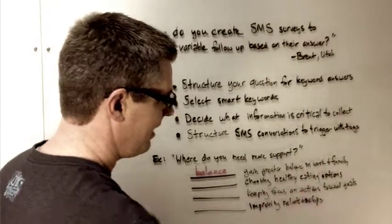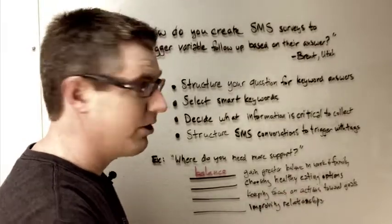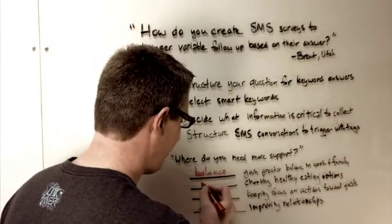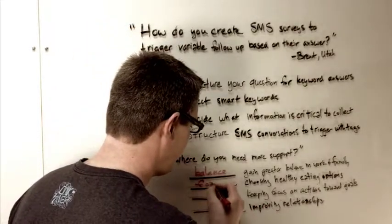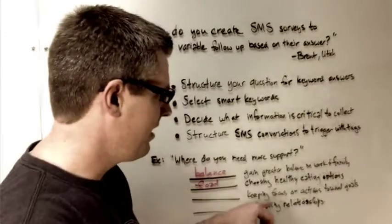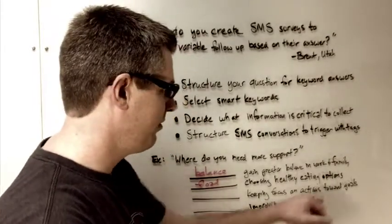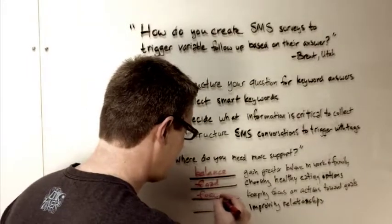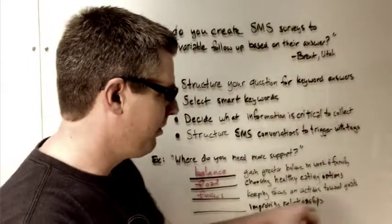Next, choosing healthy eating options. You can go a couple directions here. You can say food or eating, but I think food would actually be easier. So we go food. Keeping focus on actions towards goals. Well, for me, that one seemed like that would make sense to go focus. And then finally, improve relationships.